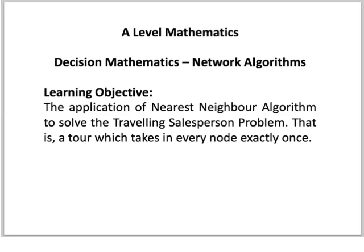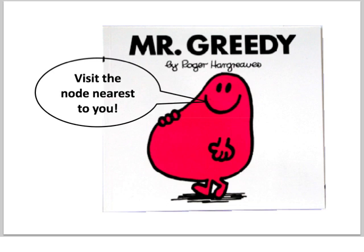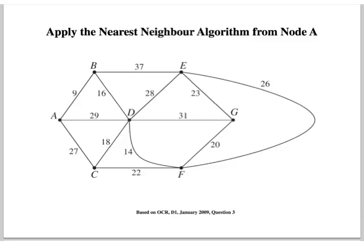Now, the nearest neighbour algorithm is an example of what we in mathematics call a greedy algorithm. There's a simple way that I remember that, which is just to think of Mr Greedy from the Mr Men. The nearest neighbour algorithm is very simple, you literally visit the node that's nearest to you. So at a node you're at, you follow the shortest route, when you get to that node you follow the shortest route, and so on until you get back to where you started.